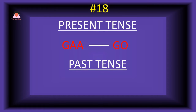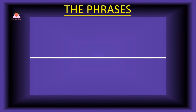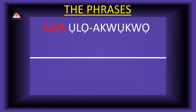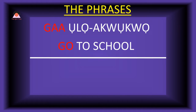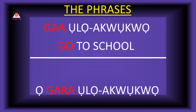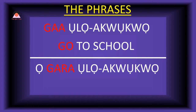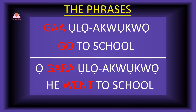Word number eighteen: 'ga,' meaning 'go.' The past tense of ga is 'gara,' meaning 'went.' Sometimes 'j' is also used for this. Present tense phrase: 'ga olapo' — go to school. Past tense: 'o-gara olapo' — he went to school.